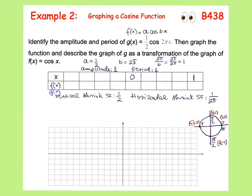I need to find half of the period, which is one-half, then a quarter of the period, which is one-fourth, and then three-quarters of the period, which is three-fourths. Notice that when our period is two pi, half of that is pi, a quarter is pi over two, and three-quarters is three pi over two. However, our period this time is one, so when we find the half, quarter, and three-quarter points we've already considered our horizontal shrink in our table of values.